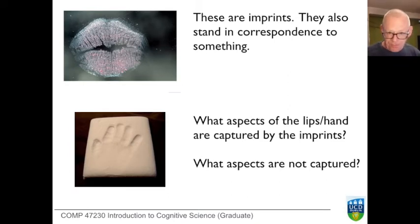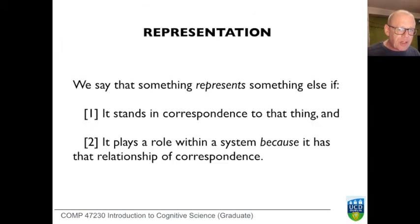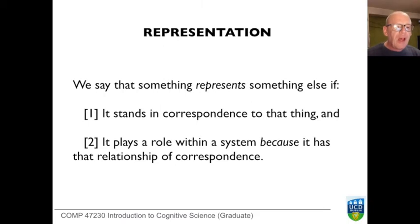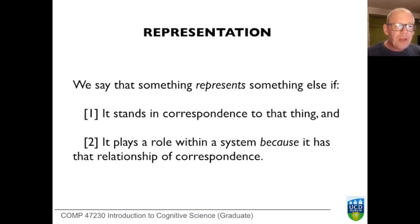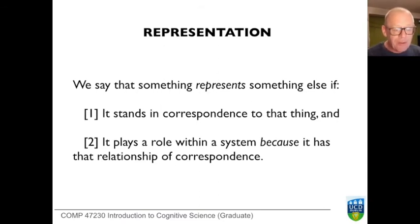So representation is a complex concept. Things stand for other things, or are related to absent things, in very many ways — some of them arbitrary, some not, some symbolic, some causal. We're going to say that something represents something else if it stands in correspondence to it and plays a role within a system because of that relationship of correspondence. The word 'horse,' for example, potentially stands in relationship to an actual animal, but there's nothing in the word 'horse' to suggest that — rather, it plays that role within the system of the English language because it has that particular relationship of correspondence.